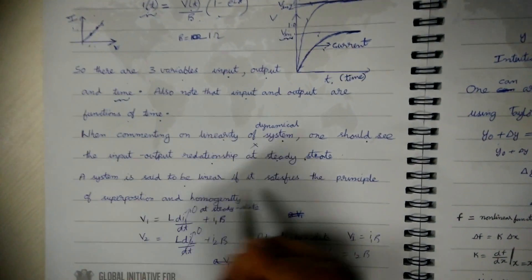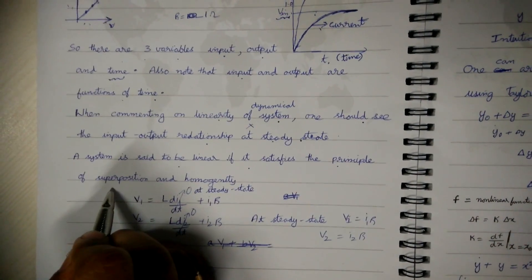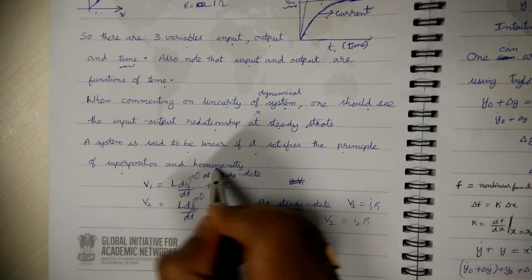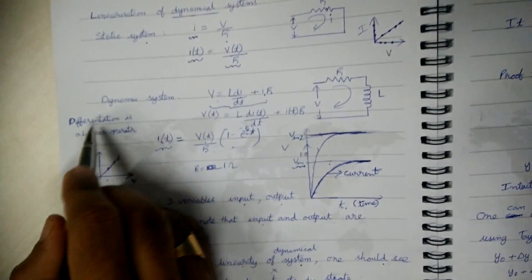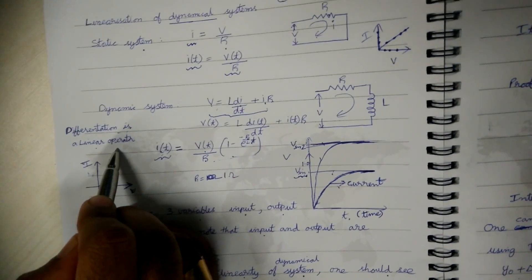A system is said to be linear if it satisfies the principle of superposition and homogeneity. This is a linear differential equation as differentiation is a linear operator.